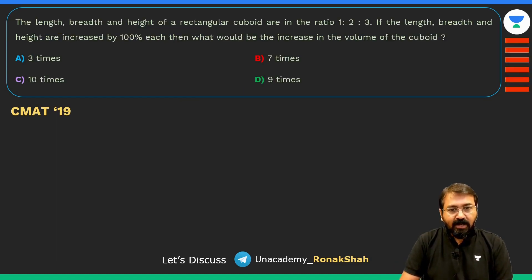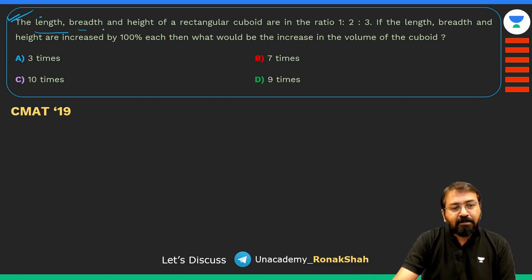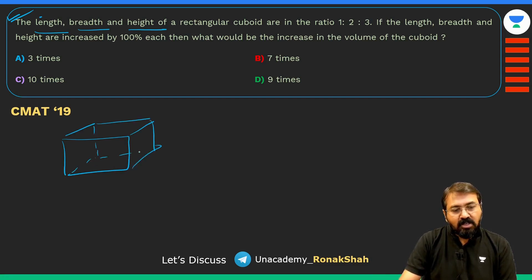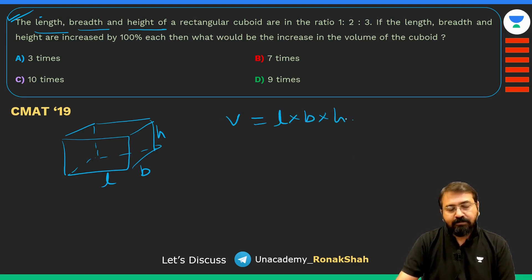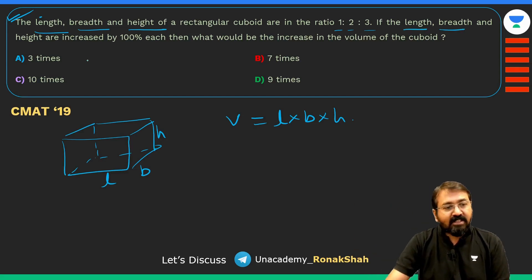Let's look at this question, once again like insult to our intelligence. What is this question? The length, breadth and height of a rectangular cuboid box. We know rectangular cuboid box is something like this, it has length L, breadth B and height H. What is the volume of the box? It will be L into B into H. Now the height, length, breadth, height are in the ratio 1 is to 2 is to 3, it doesn't matter, we don't need to use this value because we just need to find out the percentage increase.